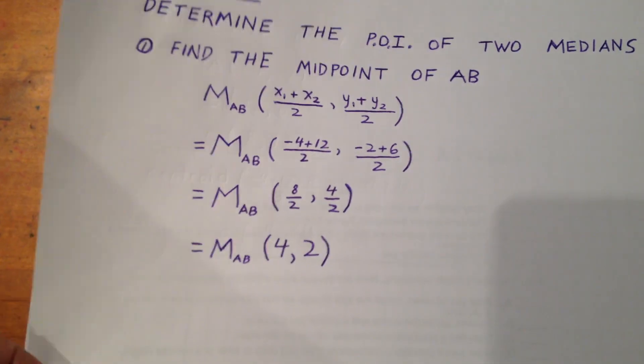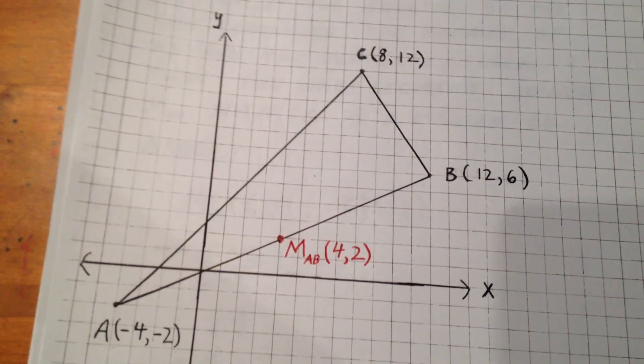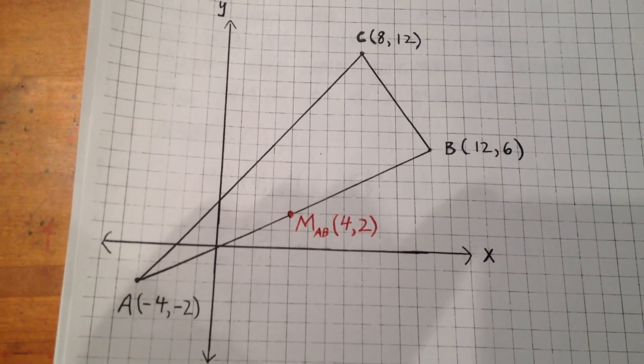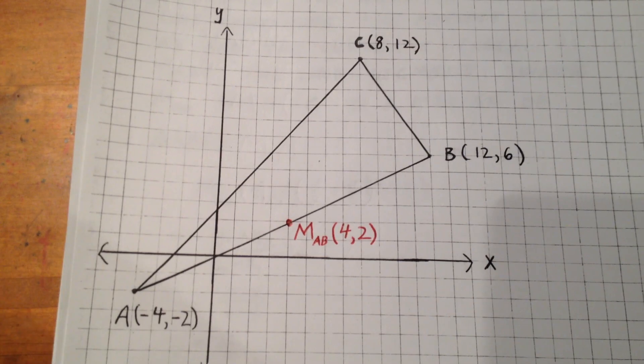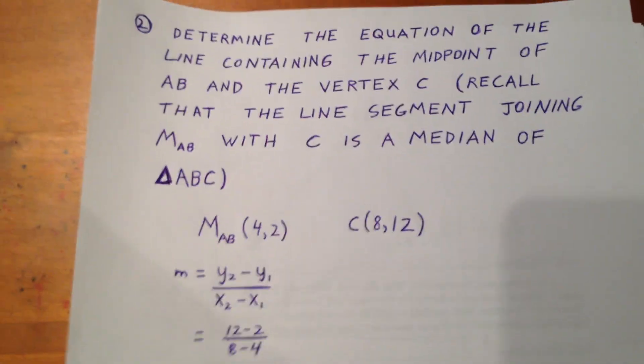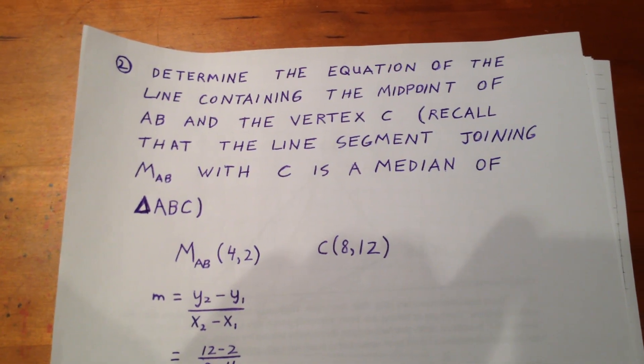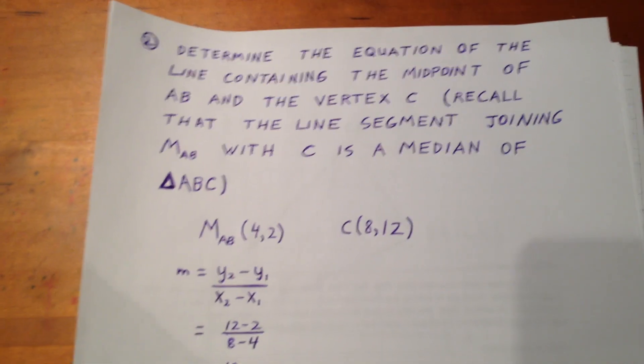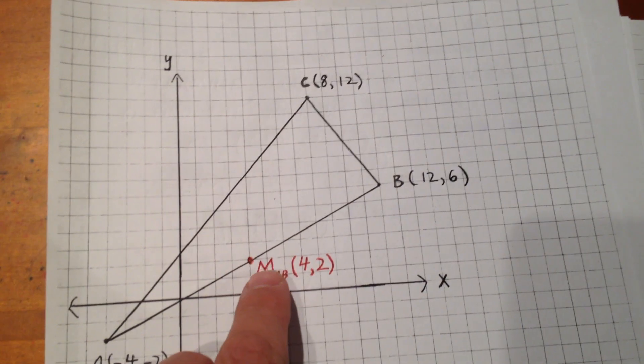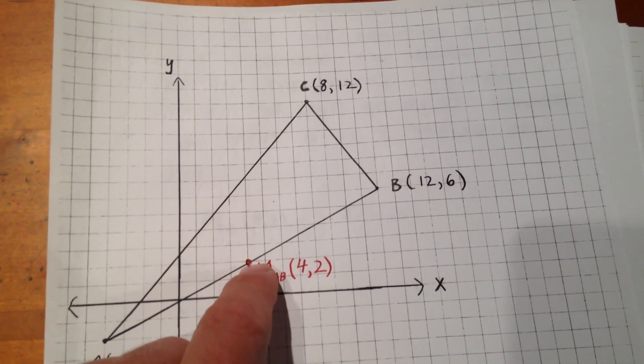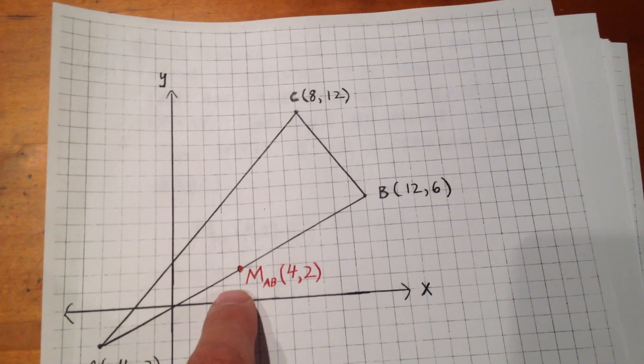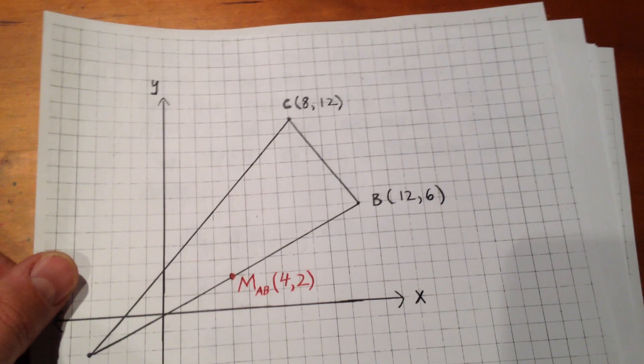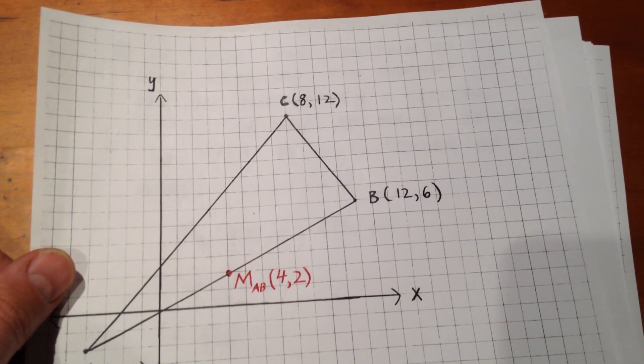We can see what that looks like graphically. Right there. We have a midpoint of AB at 4, 2. Proceeding along, we determine the equation of the line containing the midpoint of AB and the far vertex C. In other words, what we're going to do is imagine a line being drawn from the midpoint to the vertex, and we'll determine the equation of that line. And remember what the line segment itself is. That line segment is called a median.